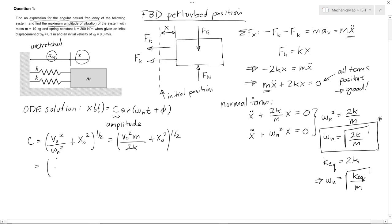We can plug in numbers for that. We get 0.3 meters per second, all squared. That's the initial velocity we're given. Times 10 kilograms. Divided by 2 times 200 meters per meter, plus 0.1 meters squared, square root of the whole expression. And we get a value of c equals 0.1107 meters.